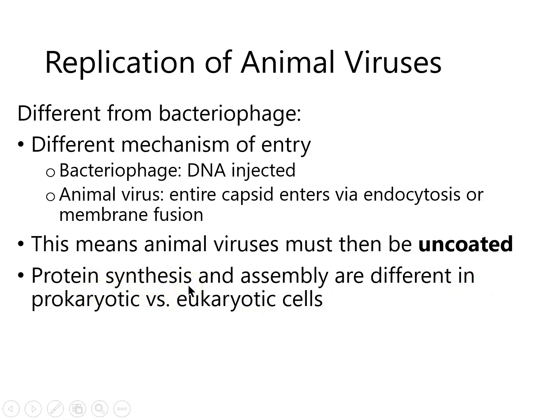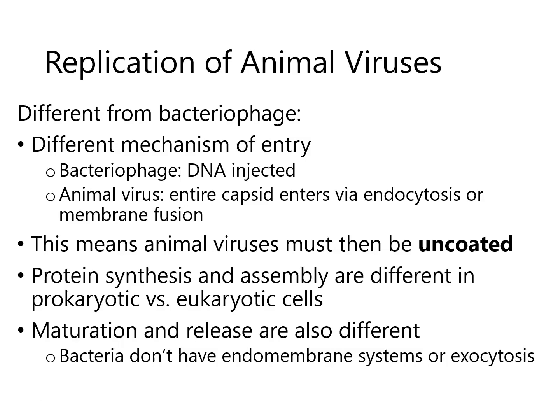Eukaryotic cells are more complicated. In a eukaryotic cell, there's a nucleus — that's where the DNA is and where transcription happens. Messenger RNAs are sent into the cytoplasm, where translation happens. Proteins get made in the lumen of the rough endoplasmic reticulum, then sent through vesicles to the Golgi and distributed throughout the cell. Bacteria don't have anything like that, so animal viruses have to take control of all of those systems.